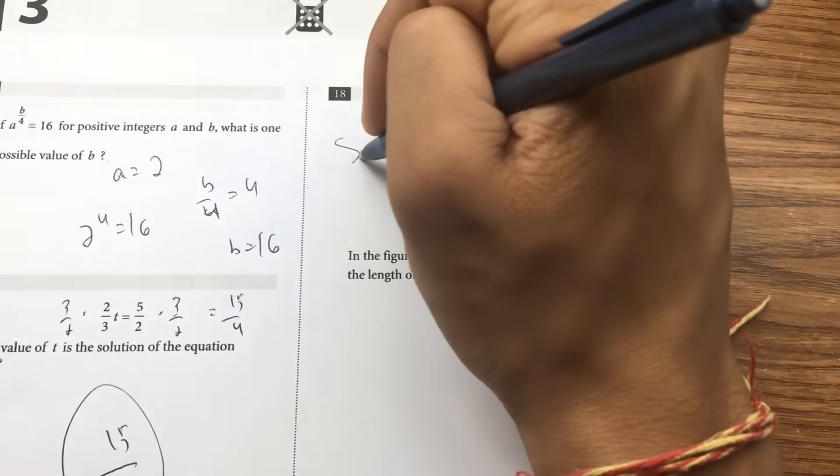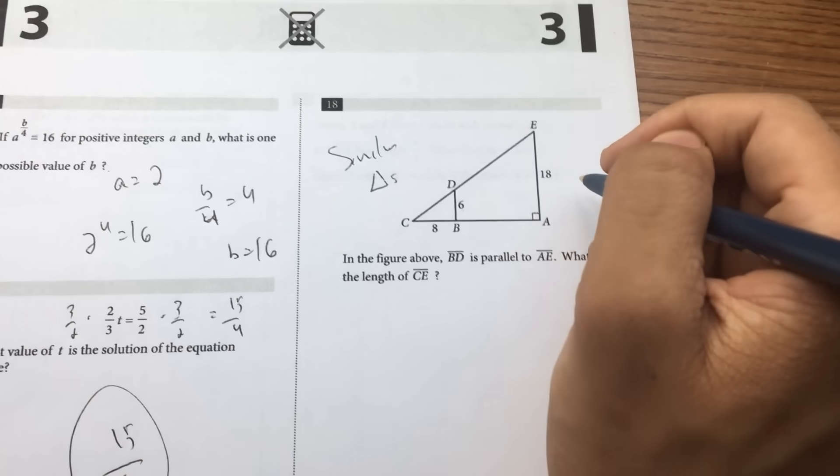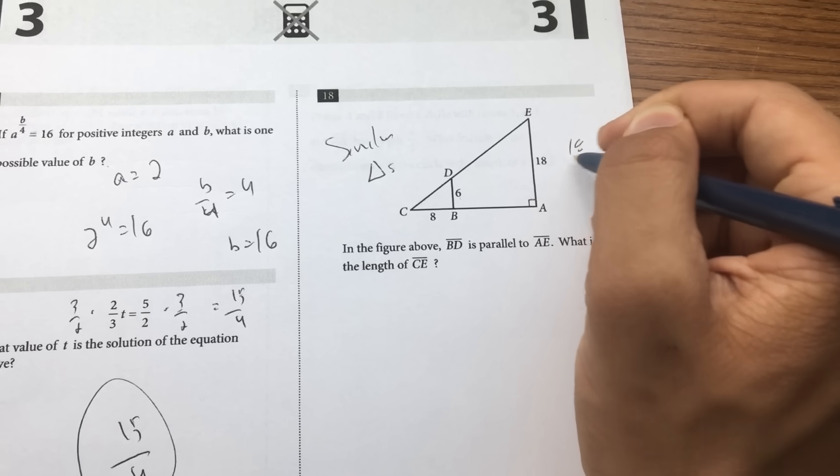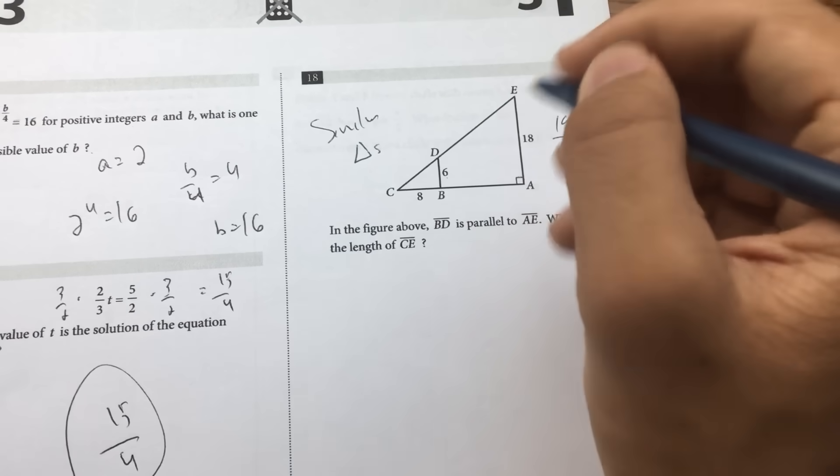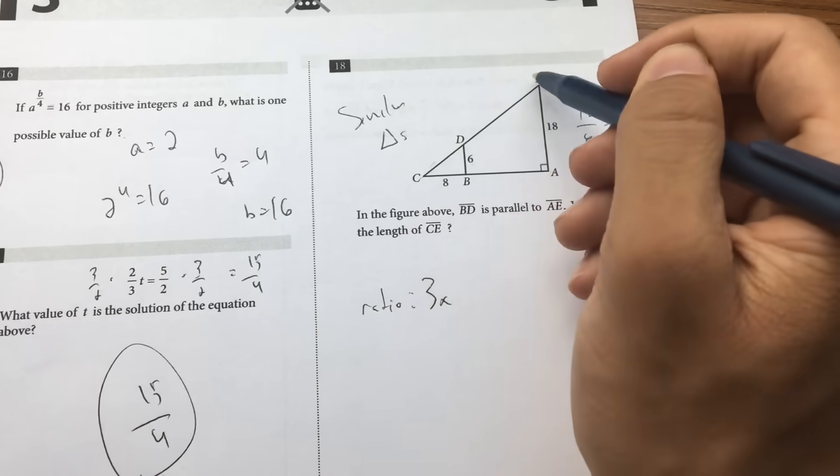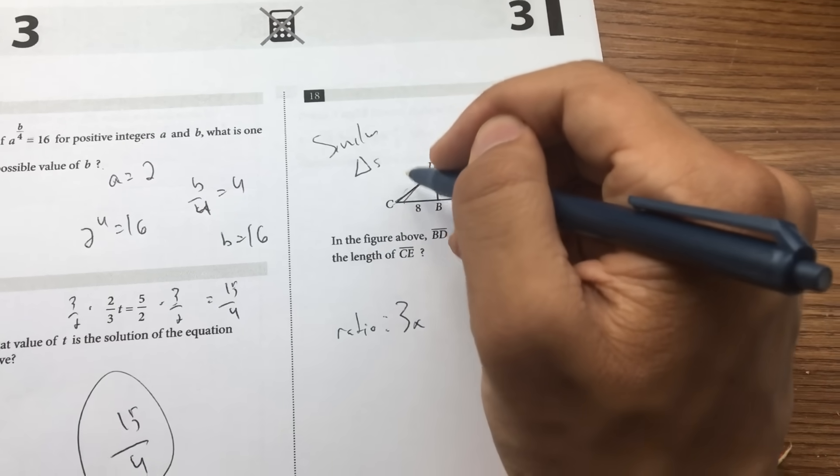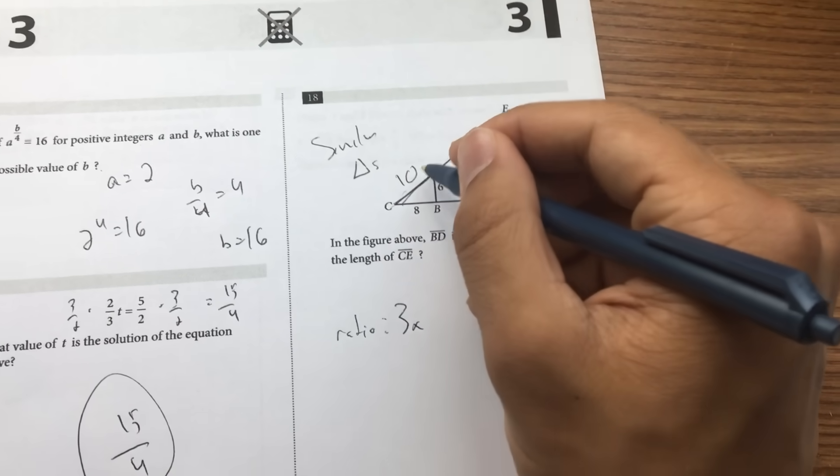This is a similar triangles problem. So you want to find the ratio. 18 over 6 equals 3. So ratio is 3x.